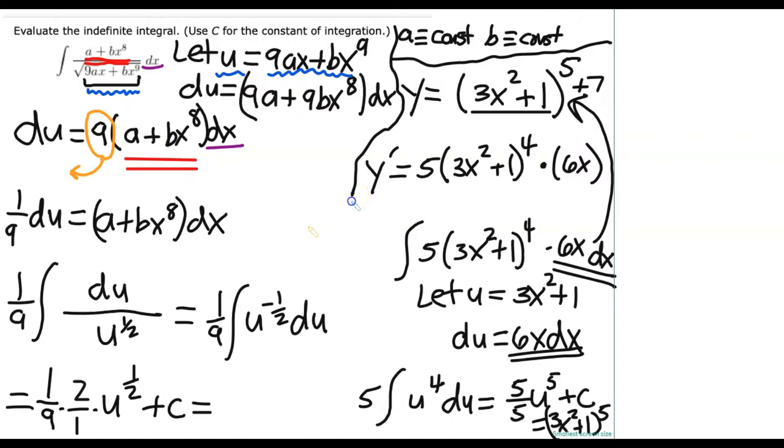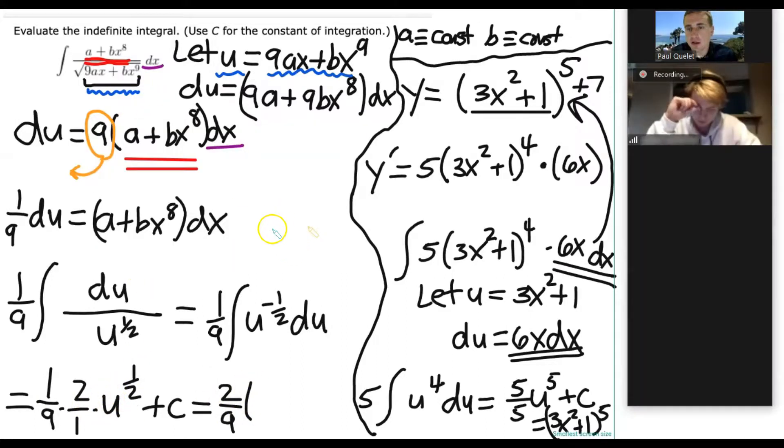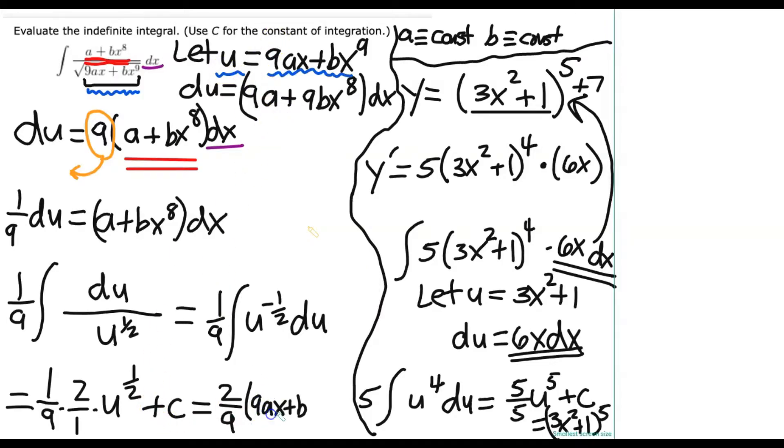Now let's finally finish this and clean this up. So first of all, what is one over nine times two over one? Two ninths. And then u is actually something in terms of x. Because we want to express the final answer in terms of our native variables. So what's going to be u? Nine ax plus bx raised to the ninth. And then we've got to go plus c. Because we can't forget that. But I think that should be our answer.